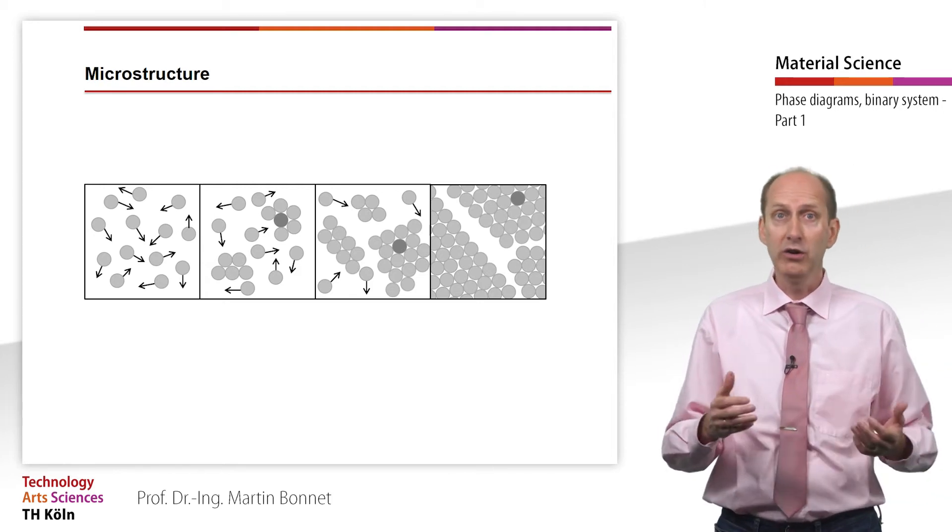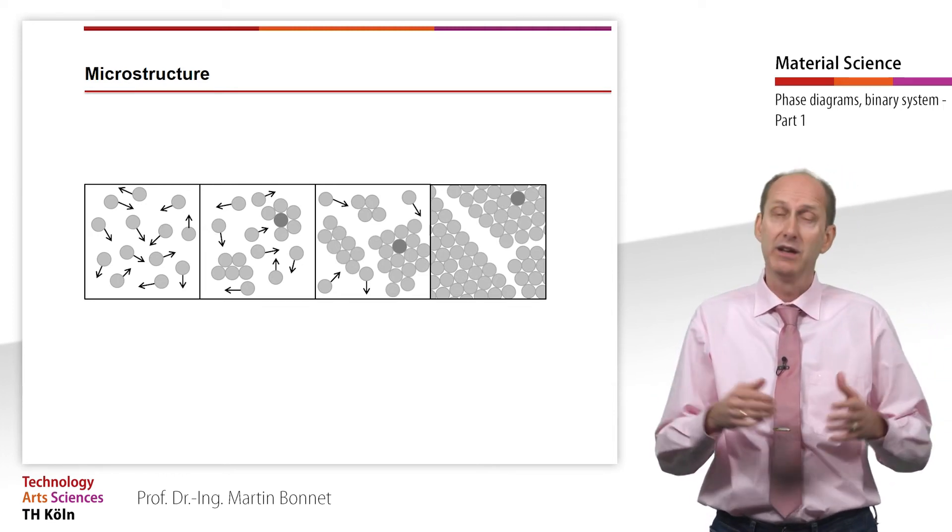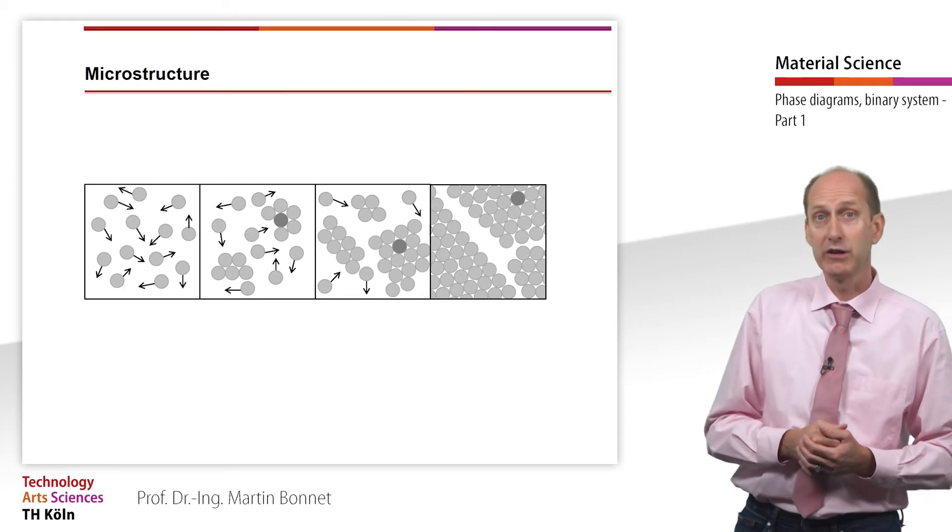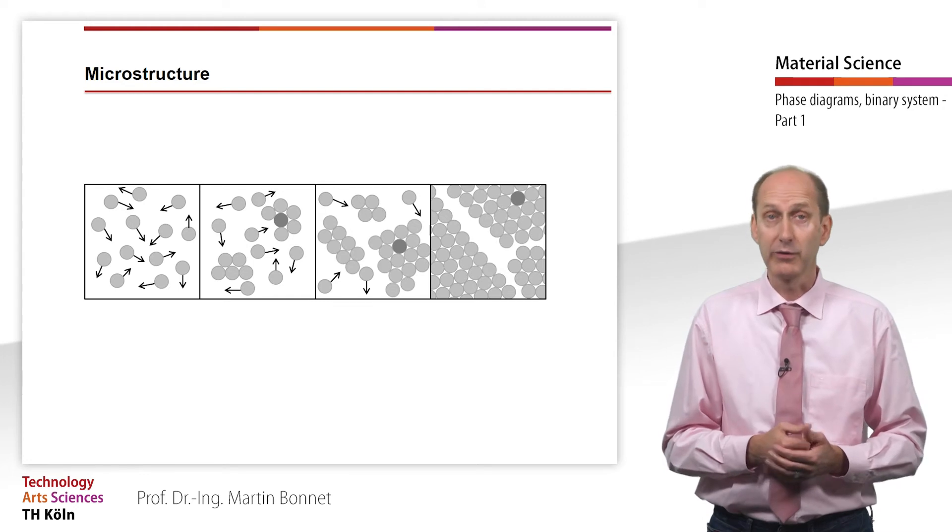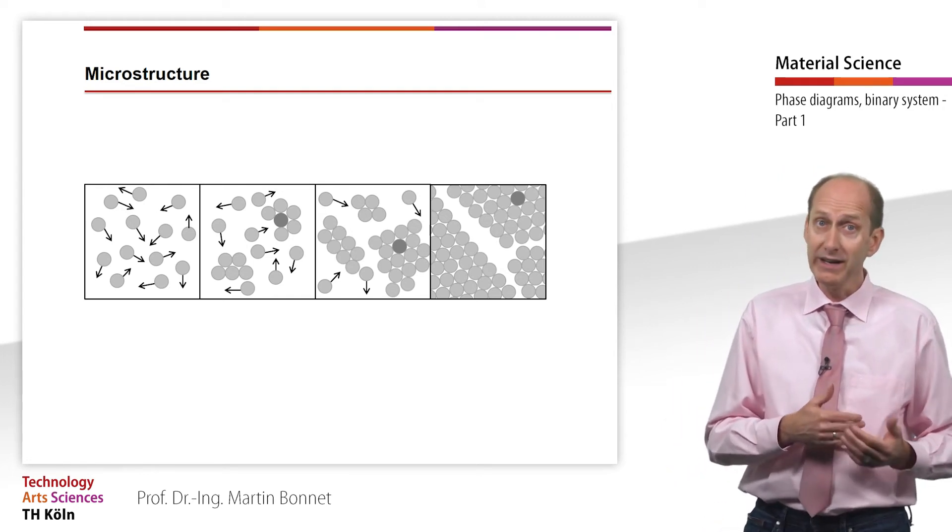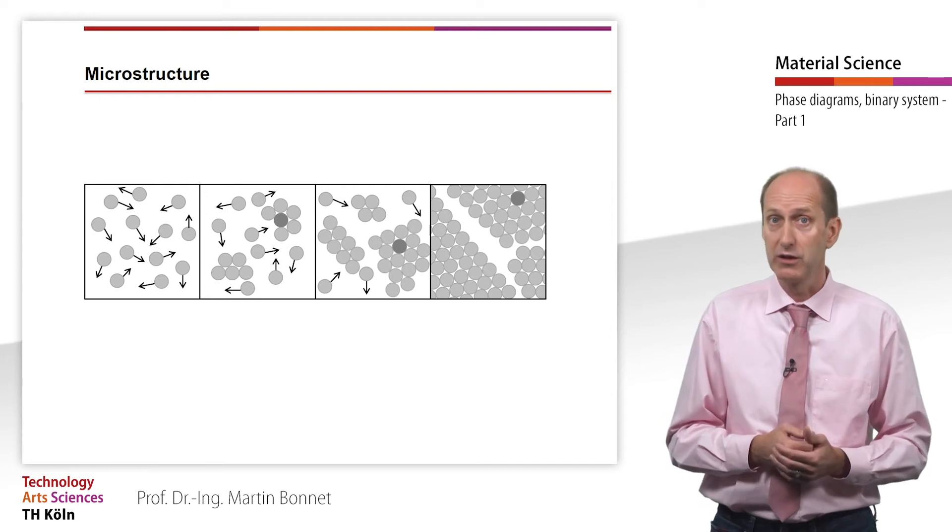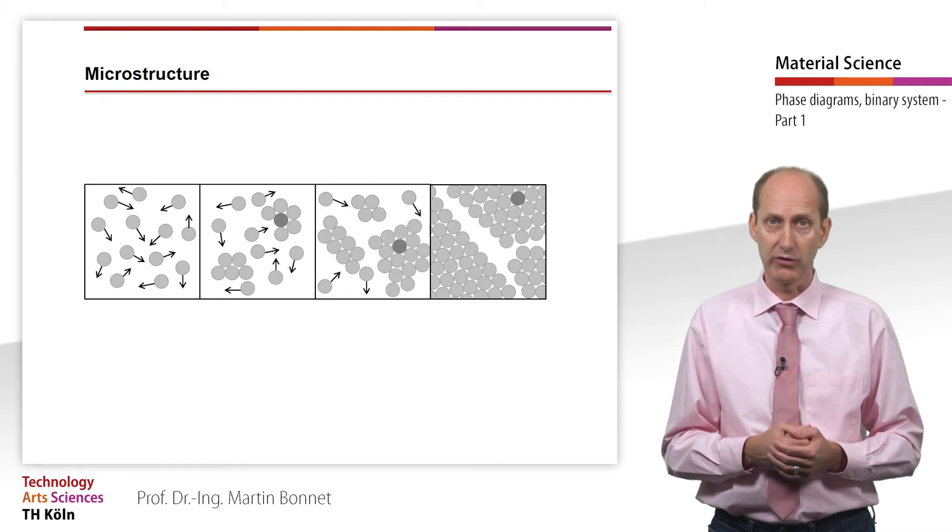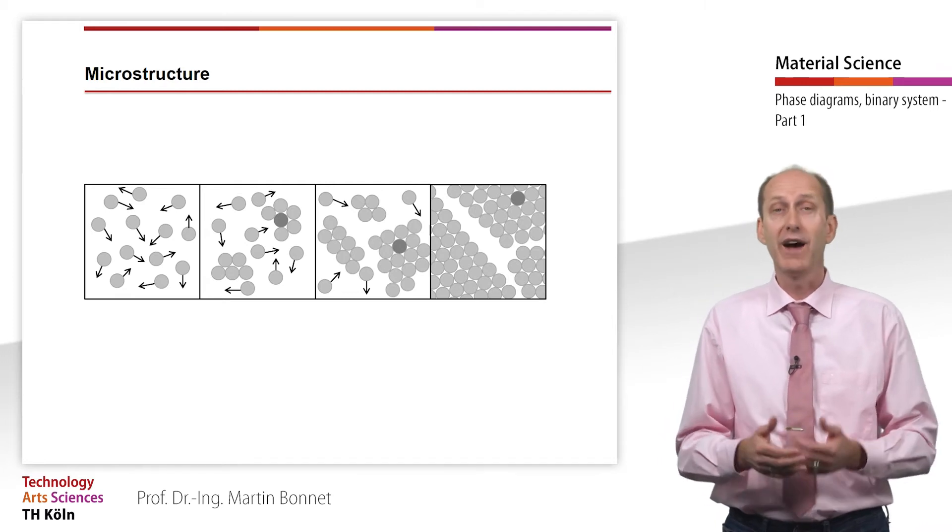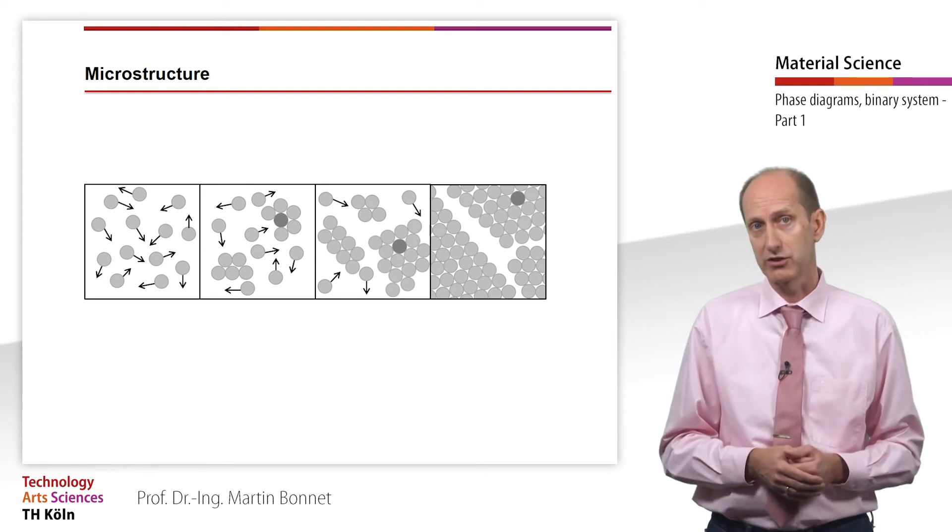If there are only few nuclei in the melt, these few crystals become very large. In this case, the metal solidifies with a coarse-grained structure. As we have already learned, the grain size significantly affects the material properties due to the two-dimensional lattice defect grain boundary. Hence, a fine-grained structure is stronger and tougher than a coarse-grained structure.